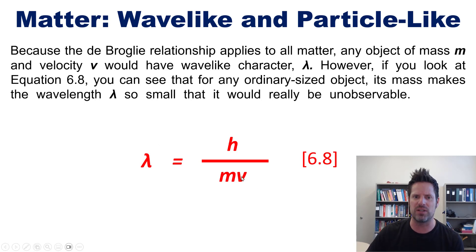However, if you look at this equation, you can see that for any ordinary size object, especially considering the fact that Planck's constant is 10 to the minus 34, very tiny, if you had a mass in kilograms of any kind of object that's big enough for you to see, lambda is going to essentially be unobservable.